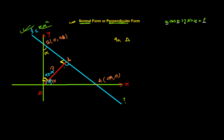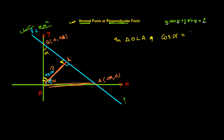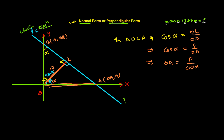Now in triangle OLA — I'm talking about this triangle — cosine of alpha equals the base over the hypotenuse. The base here is OL, which has length P, and the hypotenuse is OA. So cos α = P / OA, which gives OA = P / cos α. Therefore the coordinate of point A is (P / cos α, 0).